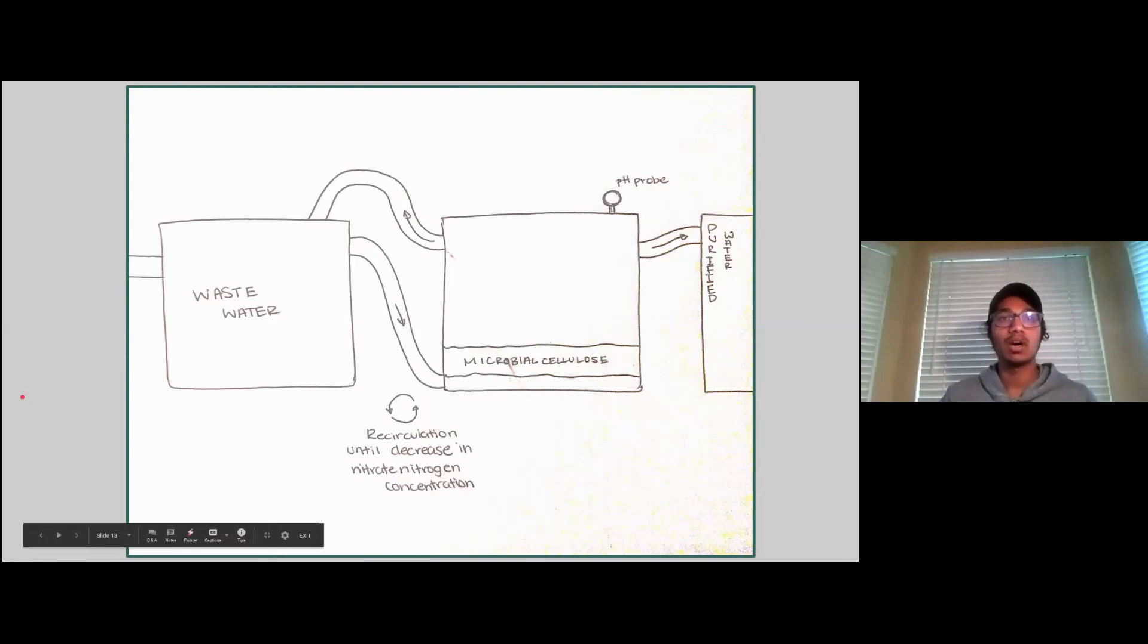This is a 2D diagram to show the process that we want to implement. We have three tanks: one for the ground or wastewater, another is the microbial cellulose chamber, and last is the purified water tank.